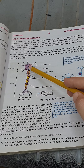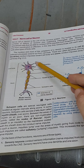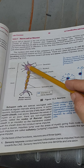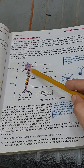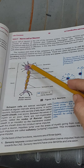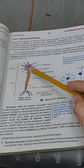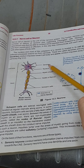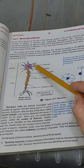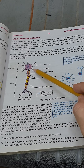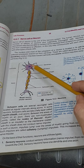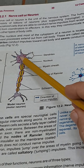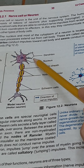A typical neuron consists of three main parts: the cell body, dendrites, and axon. The cell body contains a nucleus and cytoplasm with different organelles. From the cell body, several extensions arise known as dendrites. Dendrites are processes that extend from the cell body and carry information toward the cell body — messages pass from the dendrites to the cell body.